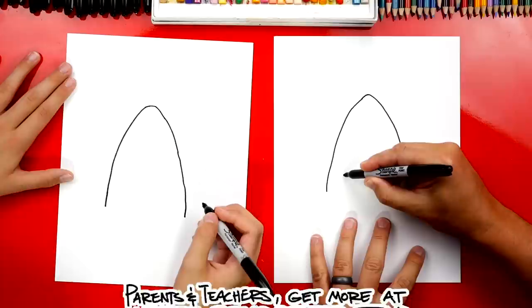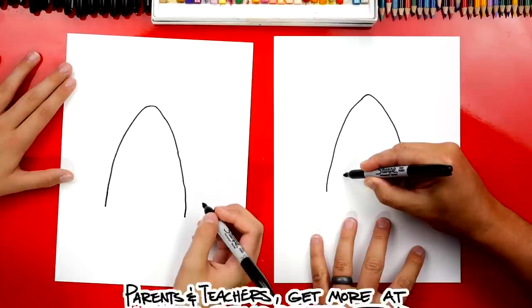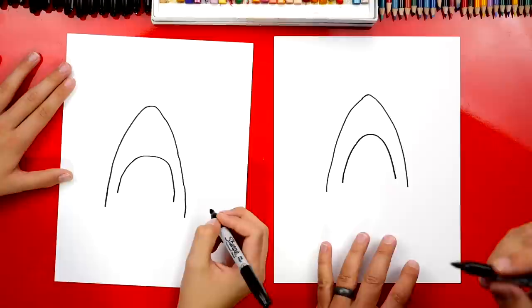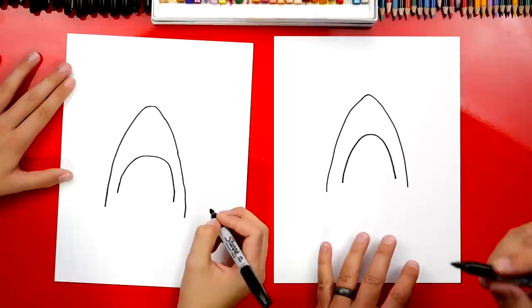Now let's draw his mouth. We're gonna draw a big upside-down U. So we're gonna start here and we're gonna draw a big upside-down U like this and then come back down on the other side. And I'm even gonna draw it coming down even further so we can draw a really big mouth. Yeah, that's awesome.